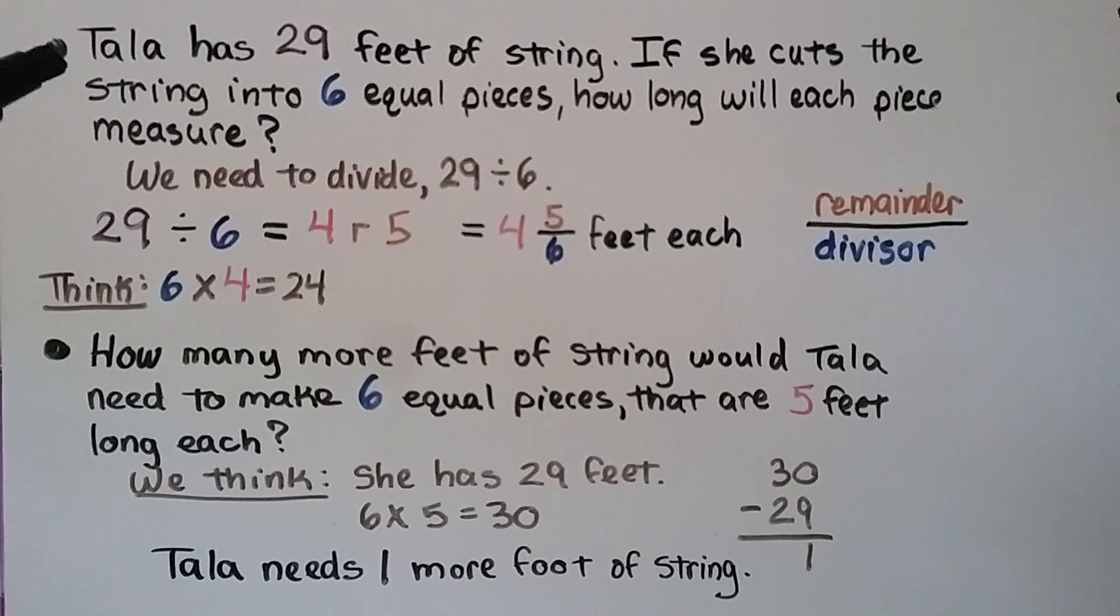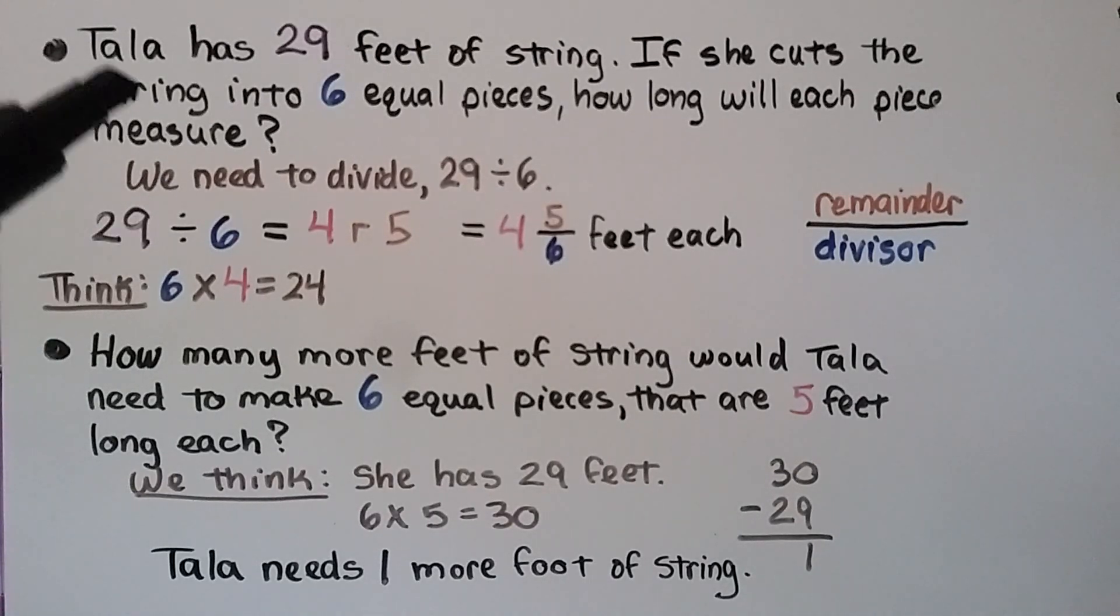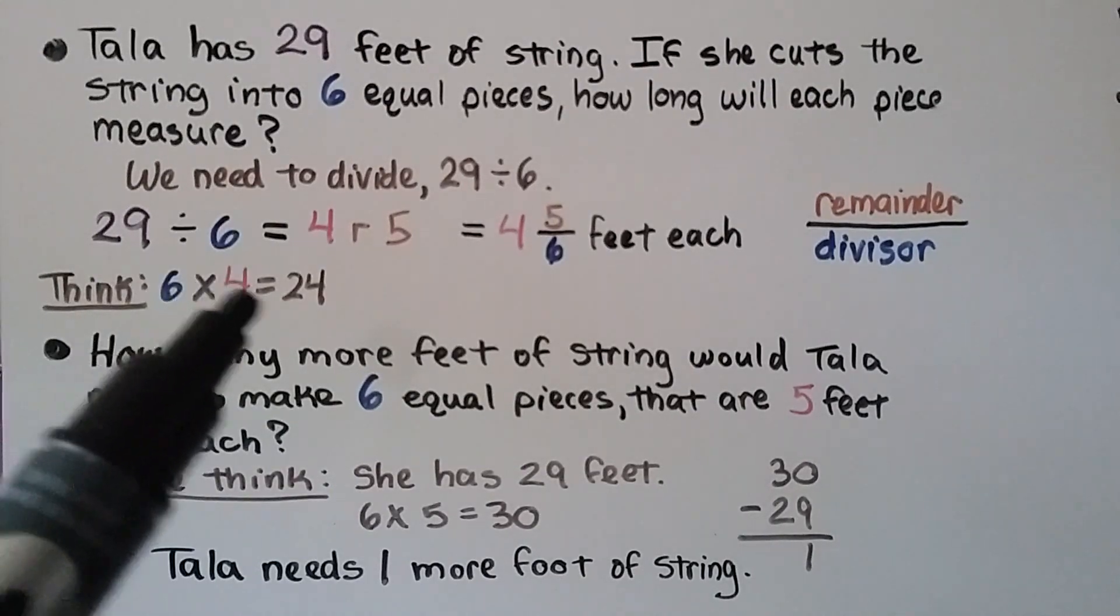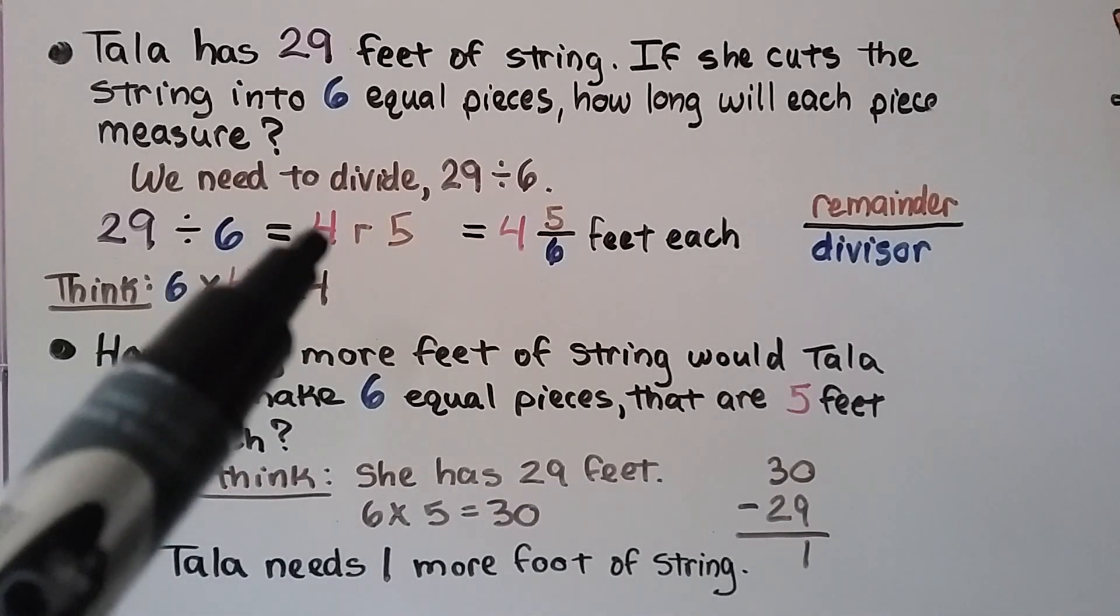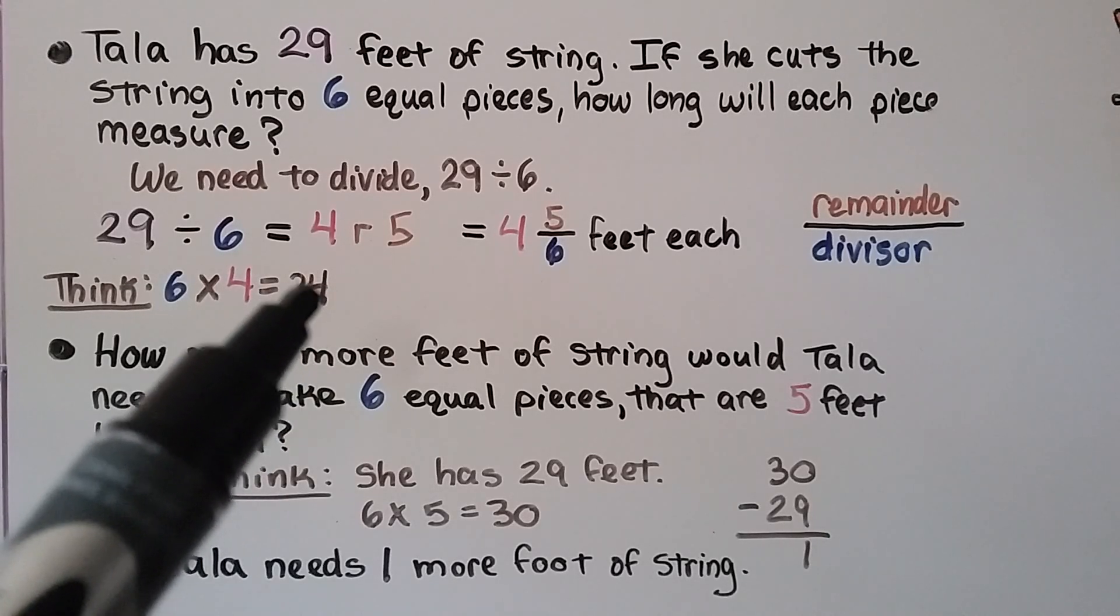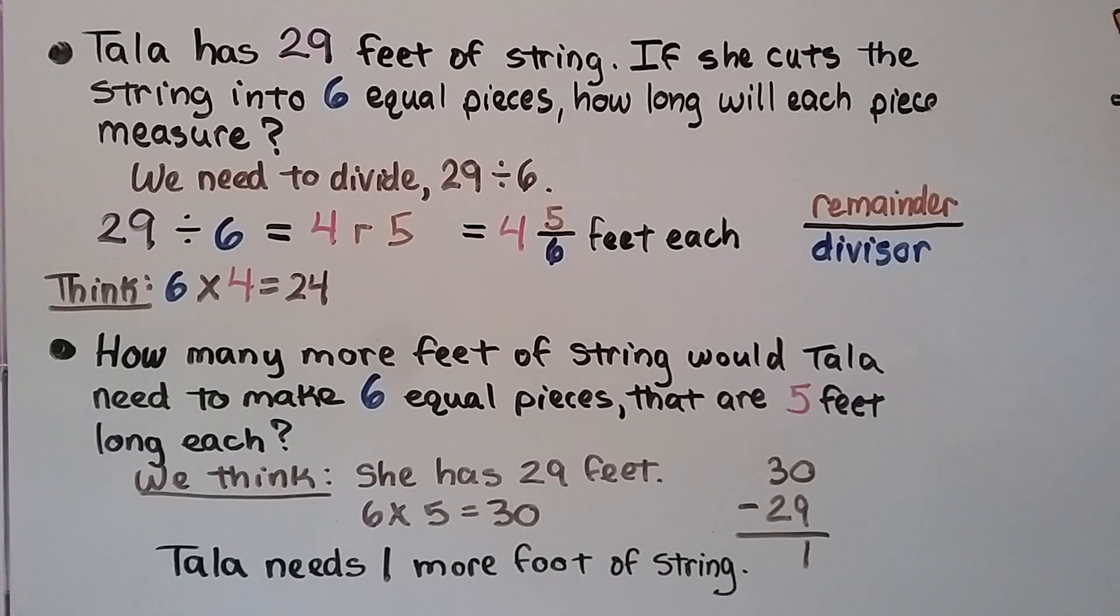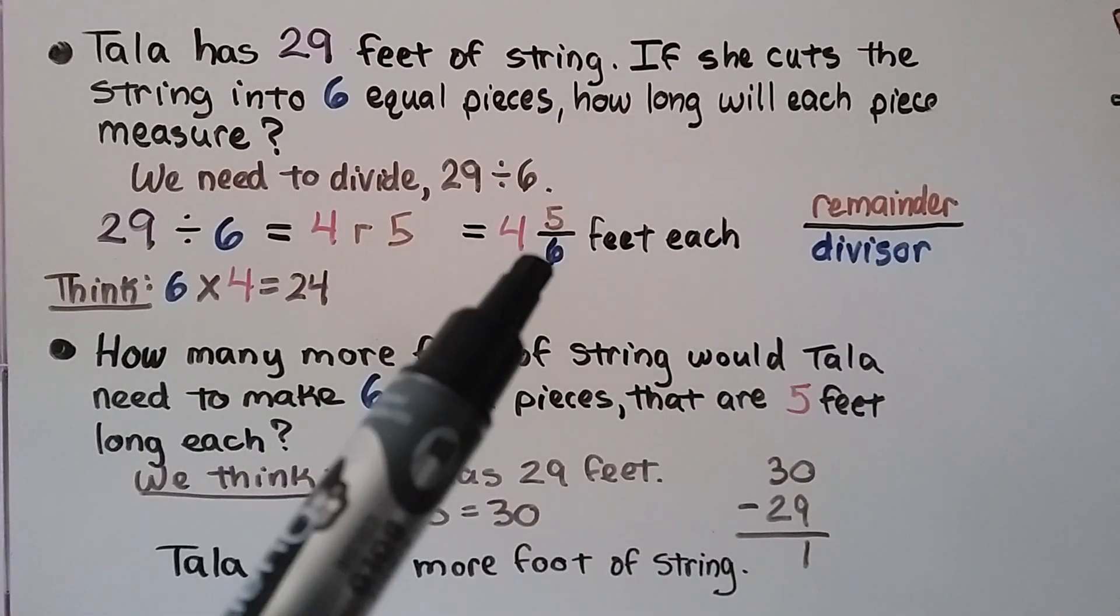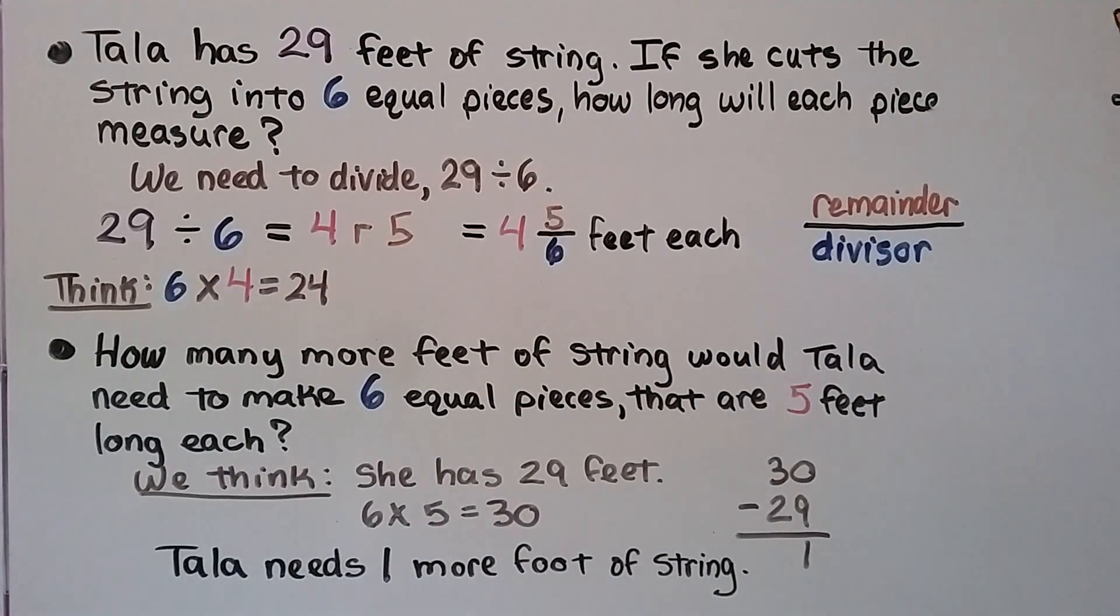Tala has 29 feet of string. If she cuts the string into 6 equal pieces, how long will each piece measure? So we need to divide 29 divided by 6. We think, well, for our 6 facts, 6 times 4 is equal to 24. So we know that would be 4, and she would have 5 left over, 5 remaining. From 24 to 29, we have a remainder of 5. And we can write a fraction with the 5 as the numerator and the 6, our divisor, as the denominator. We would get 4 and 5 sixths feet each.